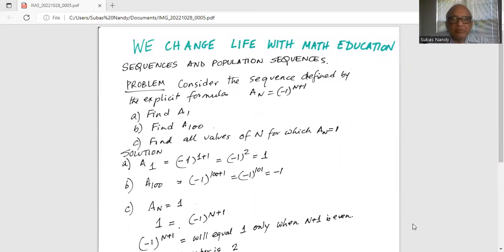Sequences and population sequences. Problem: Consider the sequence defined by the explicit formula A subscript n, that is the nth population, is given by the explicit formula (-1)^(n+1). Find A₁, find A₁₀₀, find all values of n for which Aₙ equals 1.